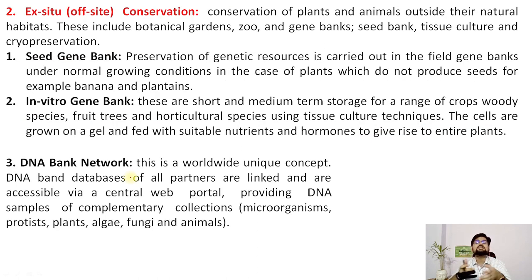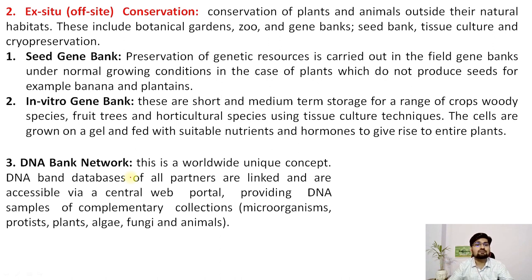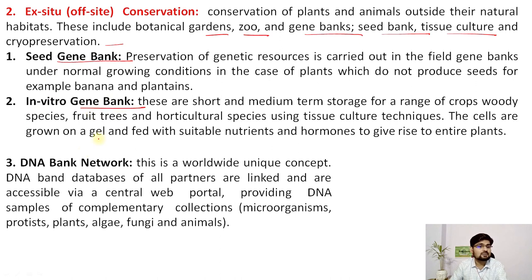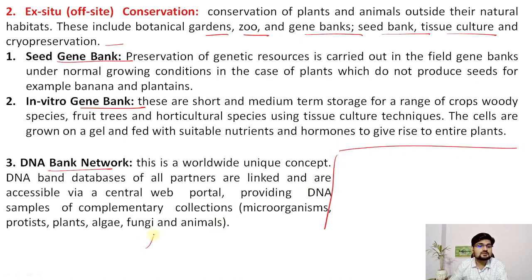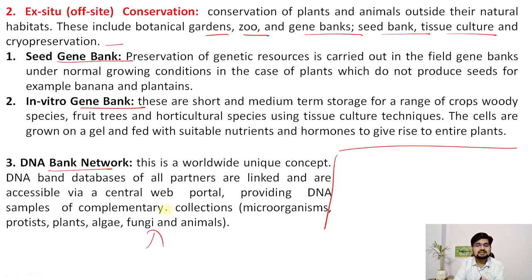Ex-situ conservation means taking species from their natural environment and placing them in a constructed off-site environment for conservation. Examples include botanical gardens, zoos, gene banks, seed banks, tissue culture, cryopreservation, vitro gene banks, and DNA bank networks. All these are constructed to protect particular species that are declining, by taking them from the environment and placing them under a conservation zone.